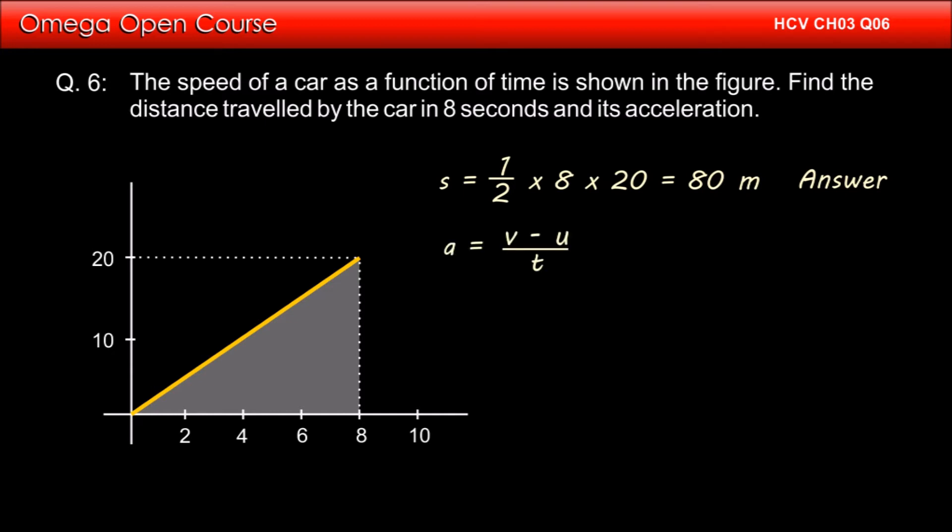Acceleration is given by final speed minus initial speed divided by time taken. As is clear from the graph, the final speed of the car is 20 meters per second and the initial speed is 0. Total time taken is 8 seconds.